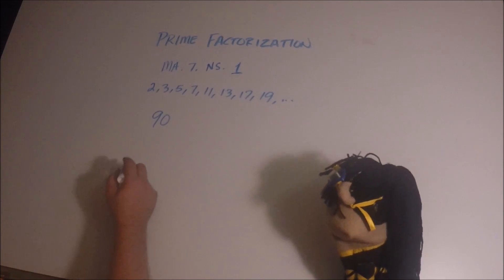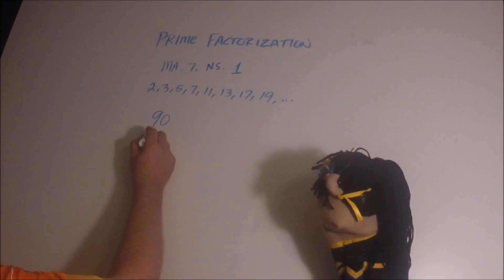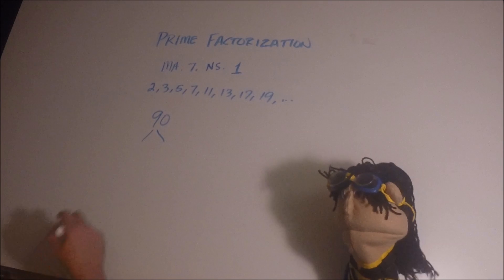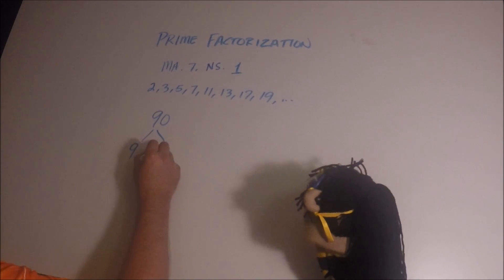So we're going to break down 90 into its prime factors as best we can. Now this method is called a factor tree. We're going to take 90 and we're going to break it down into two numbers that we know multiply to make 90. Can you tell me two numbers? 9 and 10. Okay, that'll work.